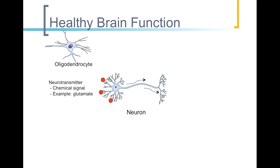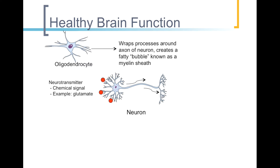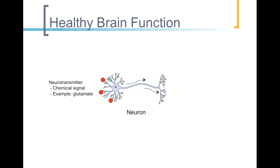Let's start with oligodendrocytes. Oligodendrocytes help neurons conduct signals through the process of myelination. In myelination, oligodendrocytes wrap their extensions around the axon of the neuron and create a sort of bubble of fat and protein. This bubble is known as the myelin sheath, and it speeds up the process of sending and receiving messages between neurons.